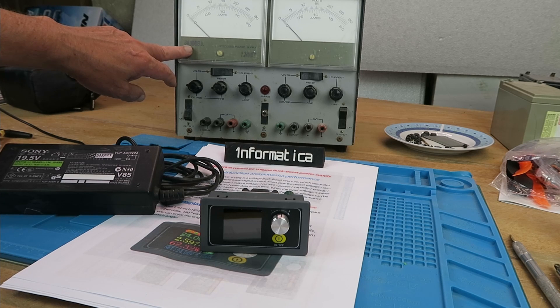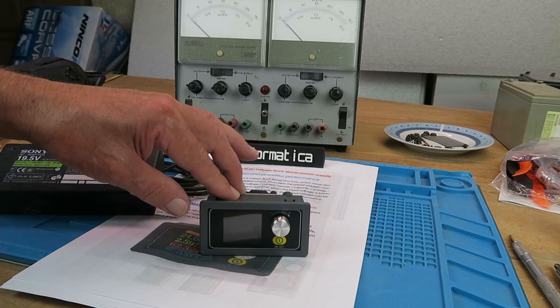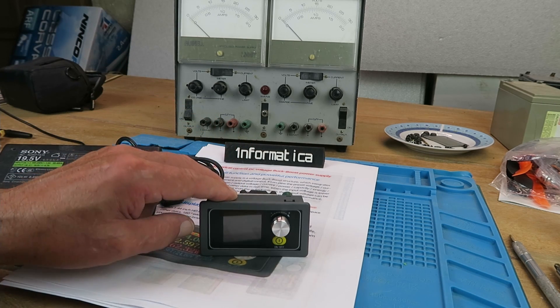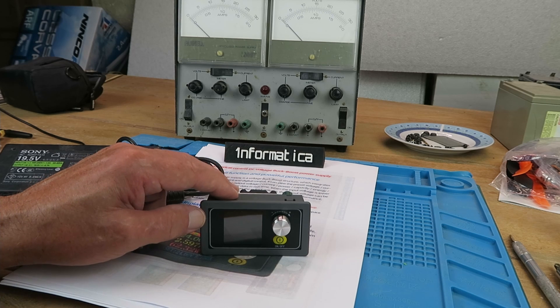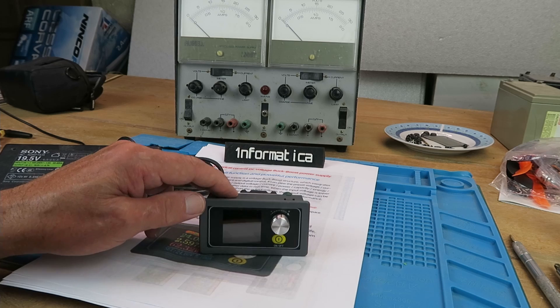0 to 30 volts at up to 2 amps and adjustable current limit. This guy can't go quite down to zero, but about 0.6 volts up to 36 volts at up to 5 amps or 80 watts.